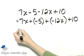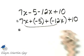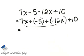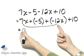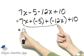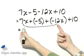Now let's find like terms to combine. Those two terms are like terms, we will combine them. I'm adding two numbers, 7 and negative 12, that have different signs, so I subtract their absolute values.